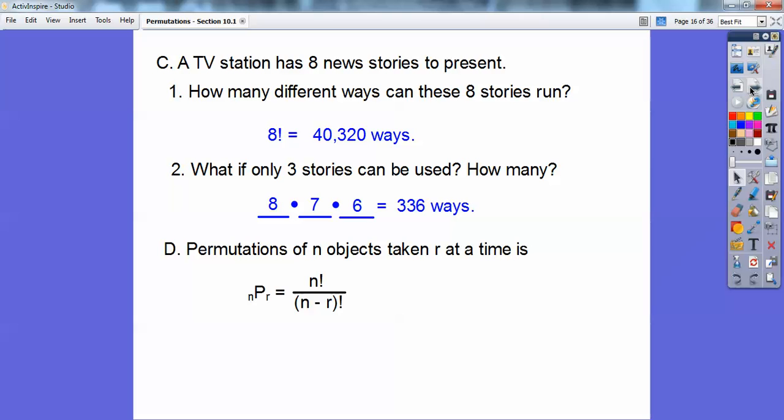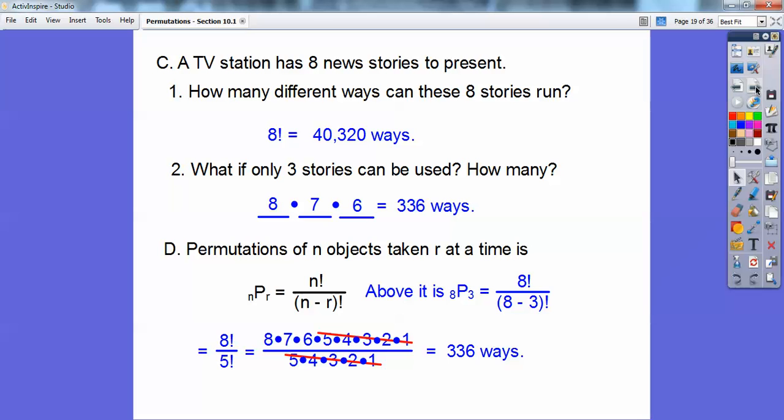So this is called a permutation. A permutation of n objects, here we had eight objects taken all at a time, but we only took three of them at a time above. It's called nPr for permutations. It equals n factorial over (n-r) factorial. So above it would be 8P3, so 8 factorial over 8 minus 3 factorial, which is 8 factorial over 5 factorial. And if you wrote all those out, it's going to cancel out the 5, 4, 3, 2, 1 downstairs, so you get 336 ways.